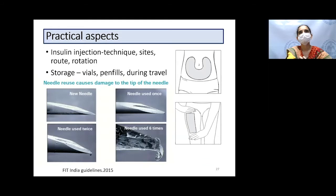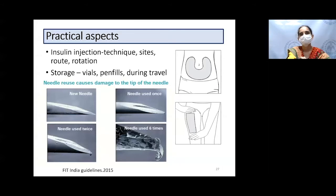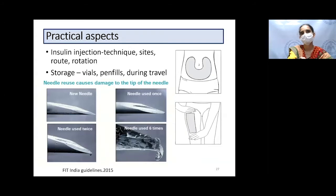Regarding needle reuse: needles are now very small—6 mm and 4 mm—so bending cannot be seen physically. A needle used six times becomes ragged and bent; when withdrawn it tears tissue along the path, leading to fibrosis and scar formation. Repeated injections at the same site cause lipohypertrophy—fat hypertrophy in those areas—which leads to erratic and unpredictable insulin absorption and frequent hypo- and hyperglycemic excursions.